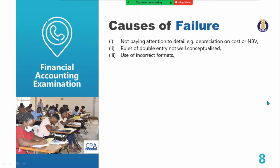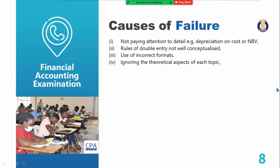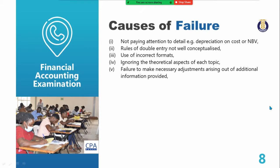Fourth, ignoring the theoretical aspects of each topic. Some of you like numbers and tend to ignore the theory — please ensure you capture the theory for each topic. Fifth, failure to make necessary adjustments arising from additional information provided. Before you start preparing the financial statements, first sort out the additional information. It is a very big mistake to start preparing financial statements without clearly sorting out the additional information first.